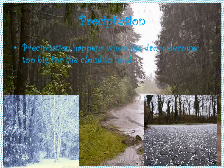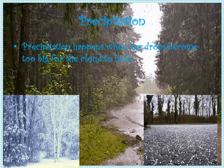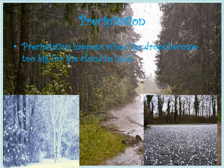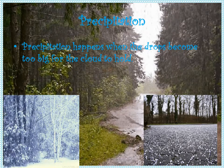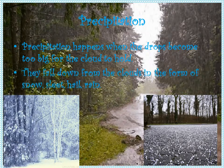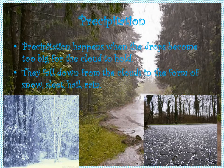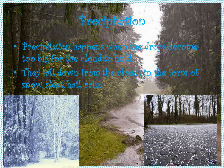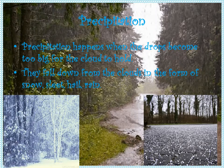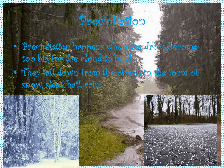Precipitation happens when the drops become too big for the clouds to hold. They fall down from the clouds in the form of snow, sleet, hail and rain.